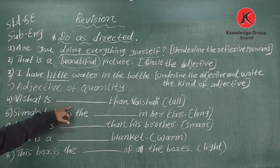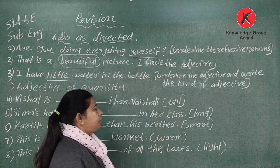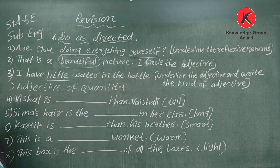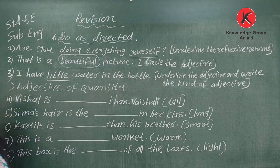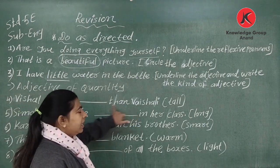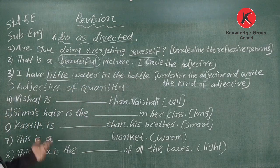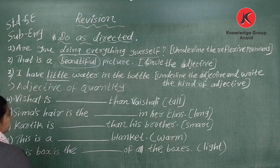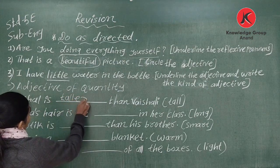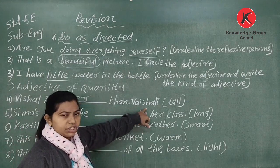Number four: 'Visar is less than Vaishali.' If you have such sentences, you have to use degree forms. You have to learn positive degree, comparative degree, and superlative degree. The answer is: 'Visar is taller than Vaishali.' We use comparative degree here.